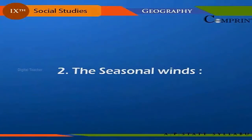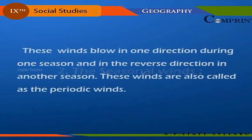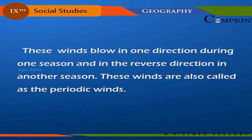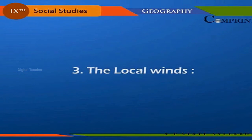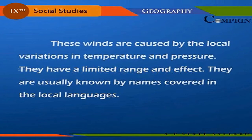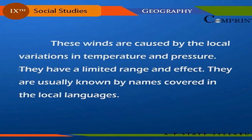The seasonal winds: these winds blow in one direction during one season and in the reverse direction in another season. These winds are also called the periodic winds. The local winds: these winds are caused by local variations in temperature and pressure. They have a limited range and effect, and are usually known by names in the local languages.